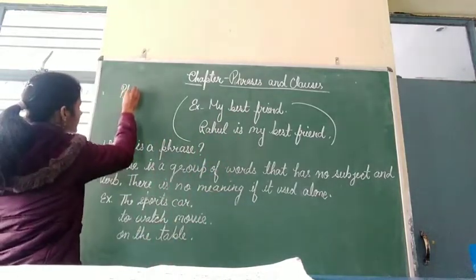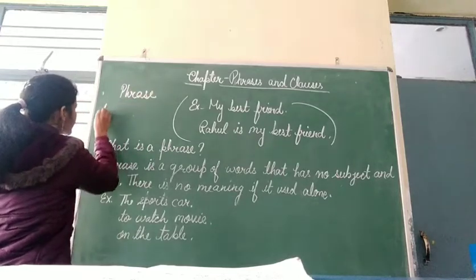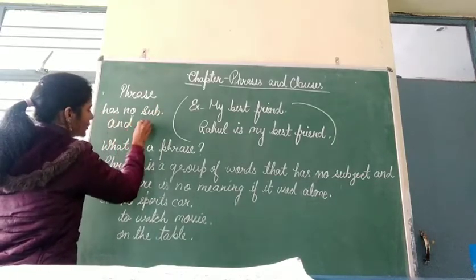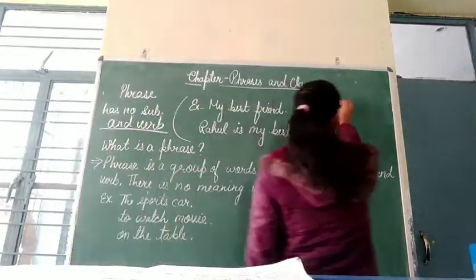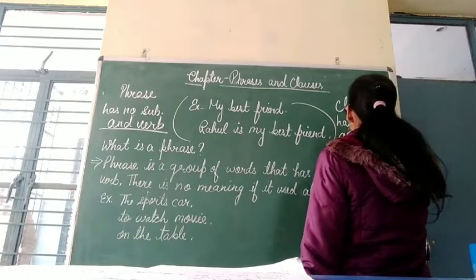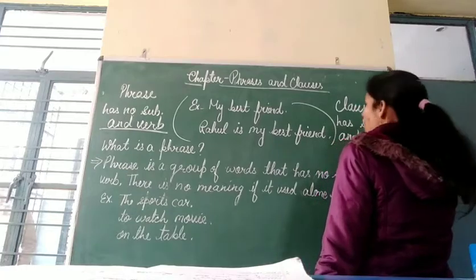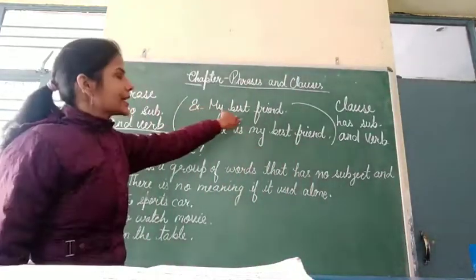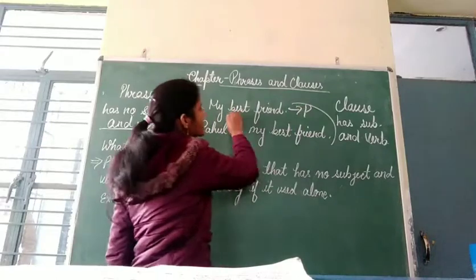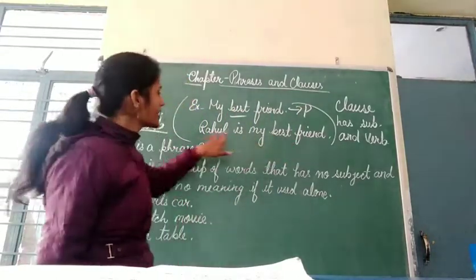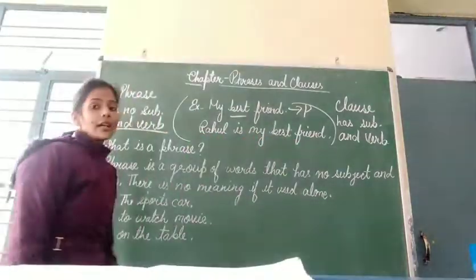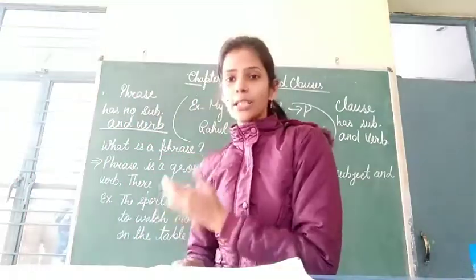A phrase has no subject and no verb. A clause has a subject and a verb. So 'my best friend' has no subject and no verb — this is a phrase. 'Ravan is my best friend' has a subject and a helping verb — so this is a clause. Now you know what is a subject, what is a clause, and what is a phrase.